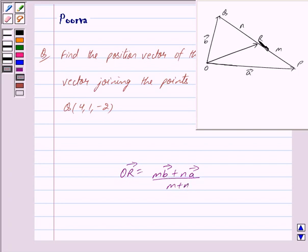Now, if R is the midpoint of PQ, then we have M equals N, and this is when R is the midpoint of PQ.